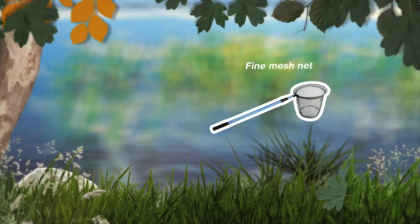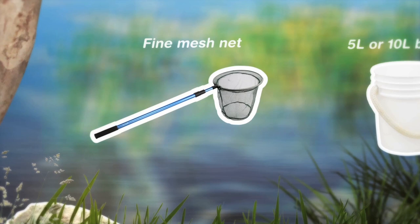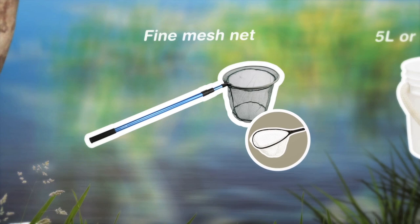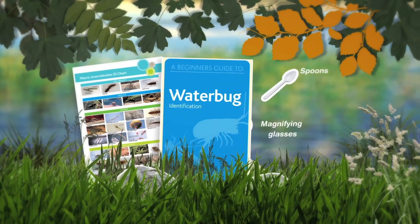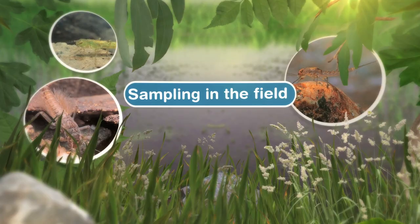To collect your water bugs you will need a fine mesh net and about a 5 litre bucket. We are using a net similar to a swimming pool cleaner, but you can also use handheld nets as long as they have a fine mesh. For sorting bugs you will need white trays, ice cube trays, spoons, pipettes and magnifying glasses. To identify and record bugs you can use WaterWatch identification charts, water bug keys and data sheets.